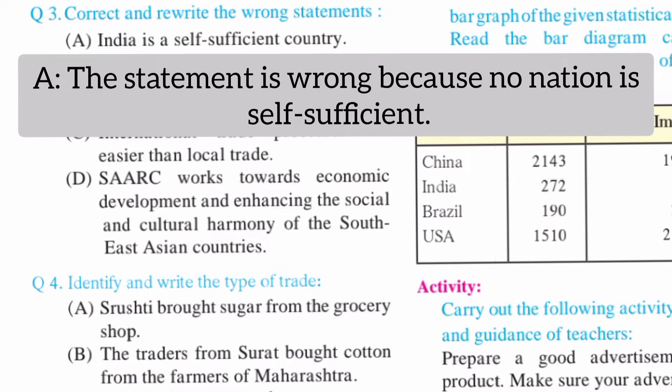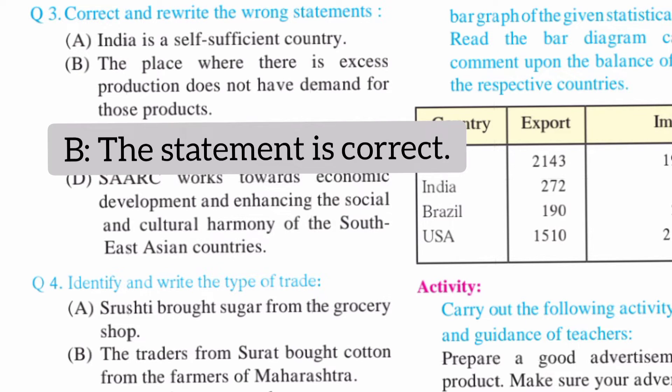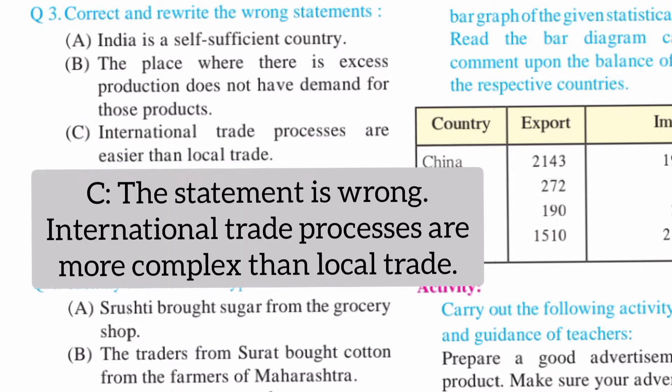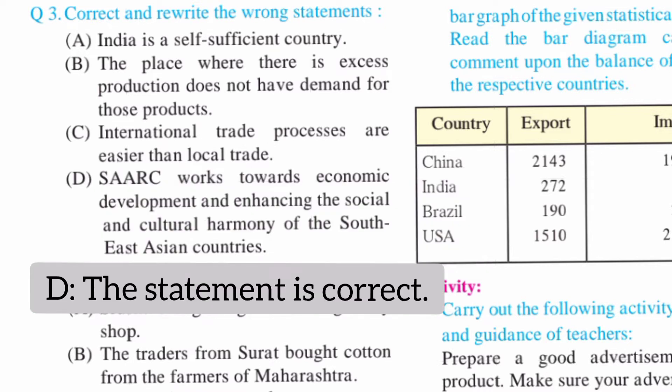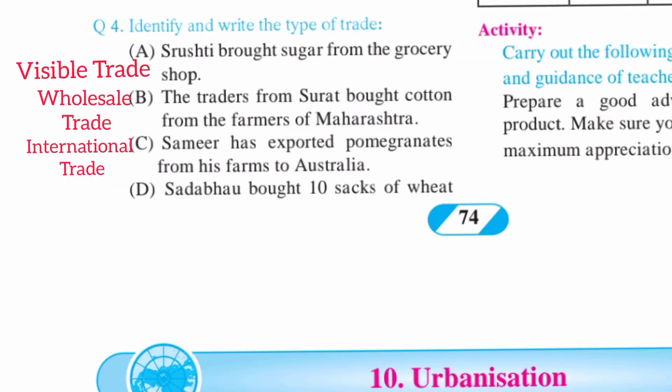Question three: Correct and rewrite the wrong statements. A) India is a self-sufficient country — the statement is wrong, because no nation is self-sufficient. B) The place where there is excess production does not have demand for those products — the statement is correct. C) International trade processes are easier than local trade — the statement is wrong; international trade processes are more complex than local trade. D) SAARC works towards economic development and enhancing the social and cultural harmony of South Asian countries — the statement is correct.